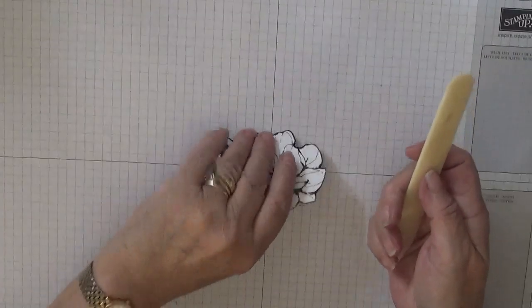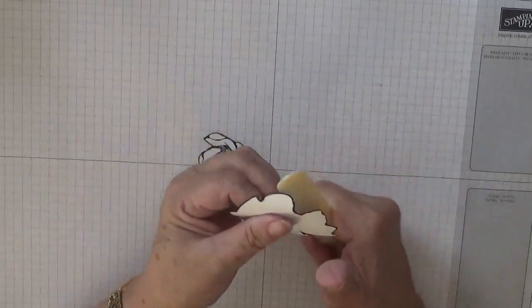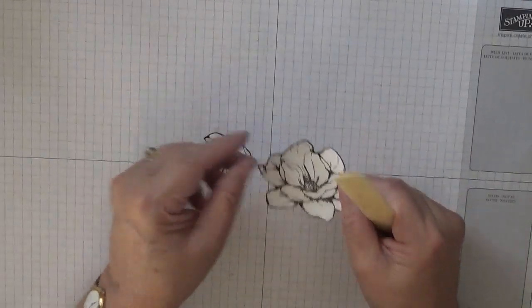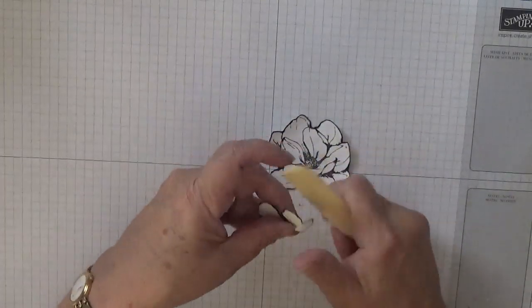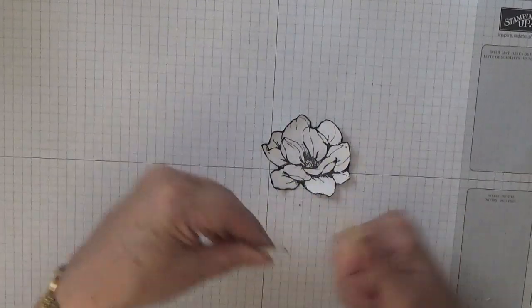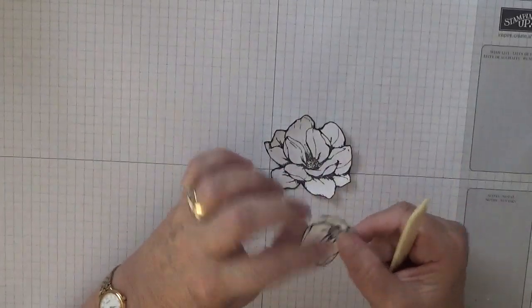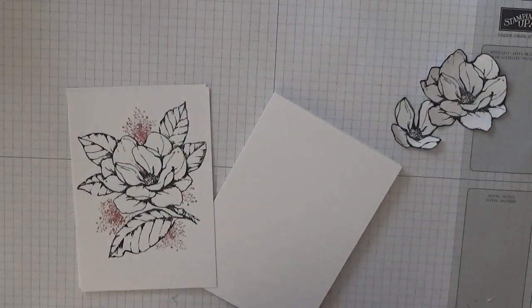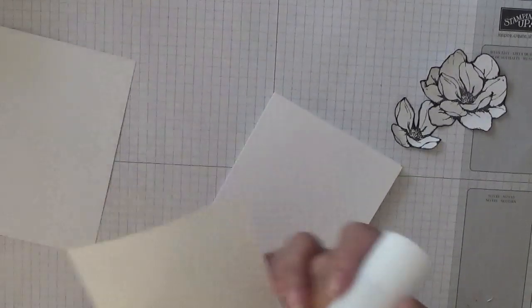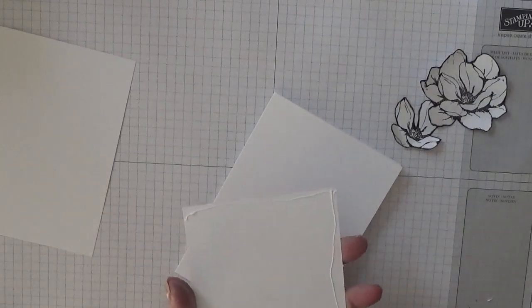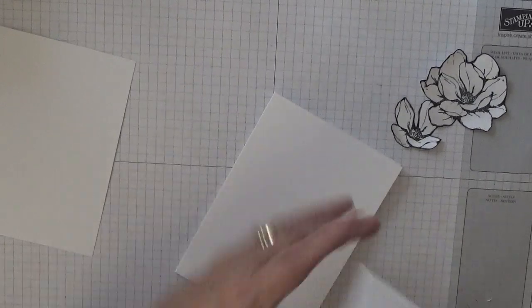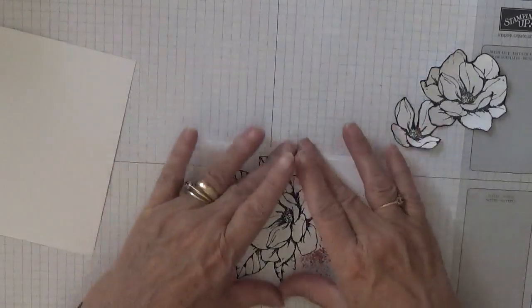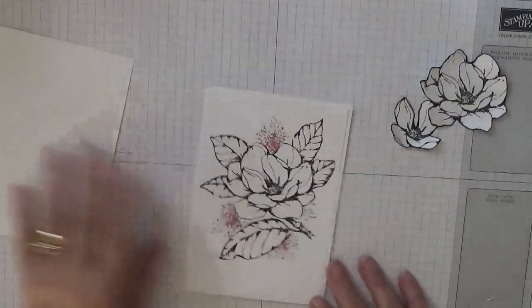Now you want to take your bone folder and just gently bend up your petals on both parts. Now we're going to stick this down.